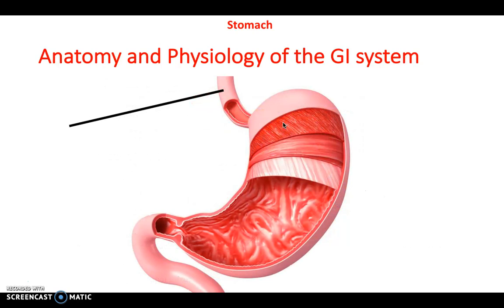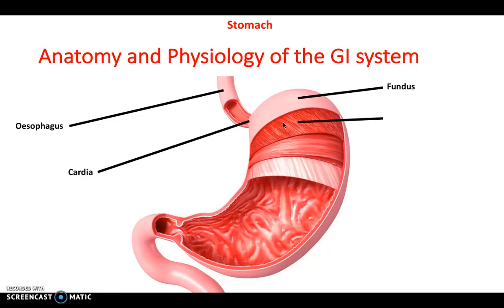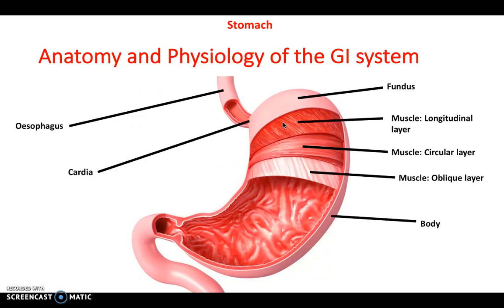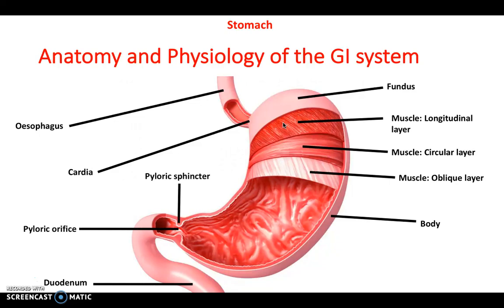Moving down to the stomach — entering via the esophagus, it goes into the cardia, and at the top you have the gas-filled fundus visible on CT. Be aware of the muscular layers of the stomach, which differ from the rest of the GI system: you have the longitudinal muscle, circular muscle, and an additional oblique layer. Going down is the body, the largest part of the stomach, which goes into the duodenum via the pyloric orifice or pyloric sphincter in the pylorus. Also note the rugae — circular folds which allow the stomach to expand on ingestion of a large meal.